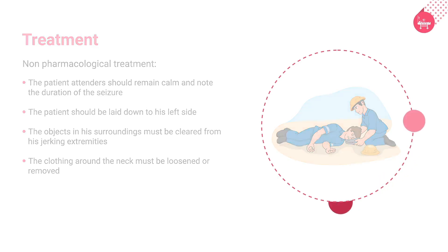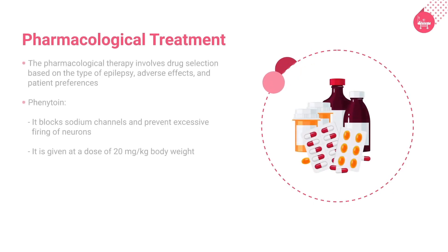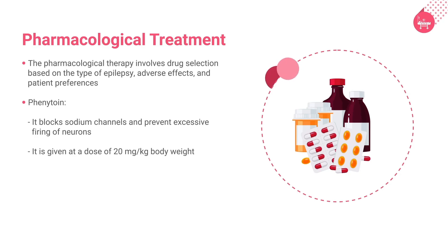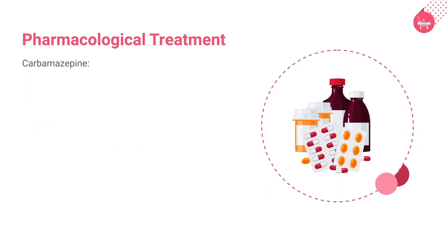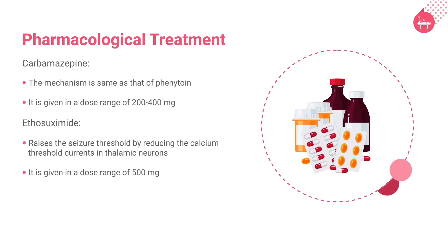The pharmacological therapy involves drug selection based on the type of epilepsy, adverse effects, and patient preferences. The first-line drug phenytoin blocks sodium channels and prevents excessive firing of neurons, thereby stabilizing the neuronal membrane and inhibiting the spread of seizures. It is given at a dose of 20 mg per kg body weight. Carbamazepine is another commonly used anti-epileptic drug with the same mechanism as phenytoin, given in a dose range of 200 to 400 mg.